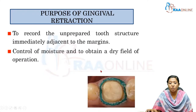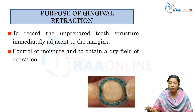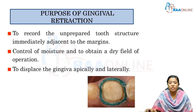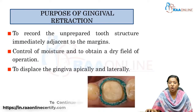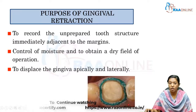Gingival retraction also enables moisture control and helps obtain a dry field of operation. Without gingival retraction devices, gingival crevicular fluid seeps into the area, preventing a dry field. Once gingival retraction is achieved, it controls the flow of gingival crevicular fluid from the sulcus and displaces the gingiva apically and laterally so the finish line is perfectly recorded in the impression.